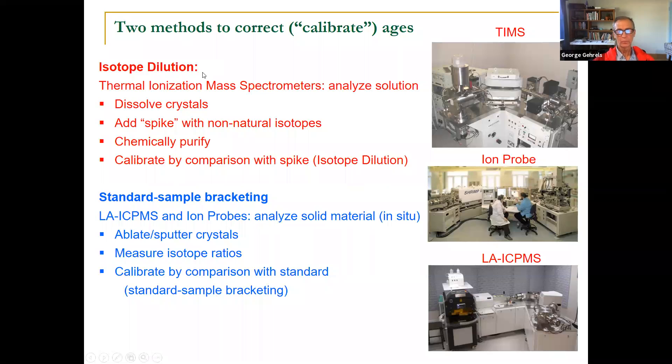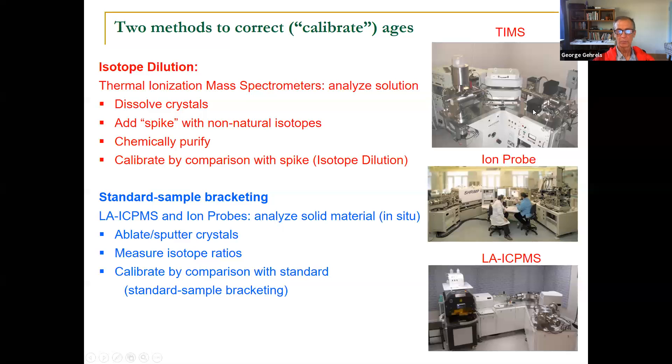There are two ways you can do it. One is called isotope dilution. When we do that, it's in a solution form. And so we put that solution into a TIMS, a thermal ionization mass spectrometer. We have to dissolve the crystals that we're going to analyze. We have to add the spike of this material. That's how we're going to dilute the isotopes. You have to chemically purify that material and then you calibrate it by comparison with a spike.